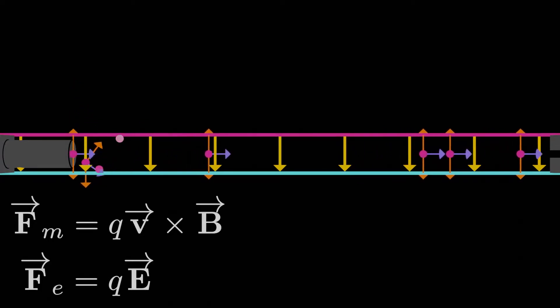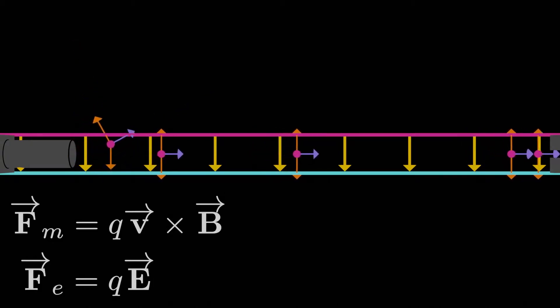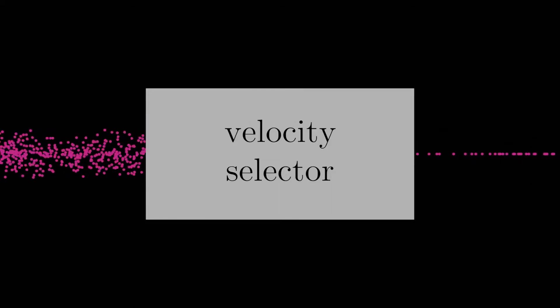It's a good thing we went over the velocity selector in the previous video, because that's going to be our starting point in this video. Now that we know how a velocity selector works, let's just treat it like a black box, so we can send a beam of charged particles into the box and it spits out a beam with less particles, but all moving at a specific speed that we selected out. That's all we need to know to make progress.